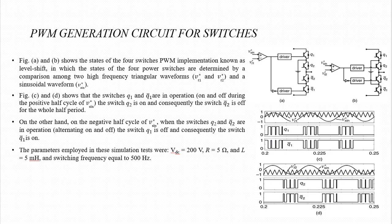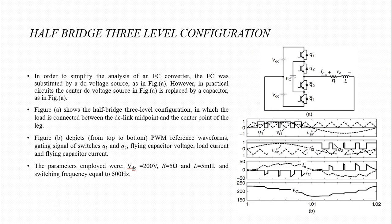On the other hand, on the negative half cycle of Vsign, when switches Q2 and Q2-bar are in operation alternating on and off, switch Q1 is off and consequently Q1-bar is on. The parameters employed in these simulation tests were: VDC = 200 V, R = 5 ohm, and L = 5 millihenry, and switching frequency equal to 500 Hz. For the half bridge 3-level configuration, in order to simplify the analysis of an FC converter, the FC was substituted by a DC voltage source, as in Figure A.